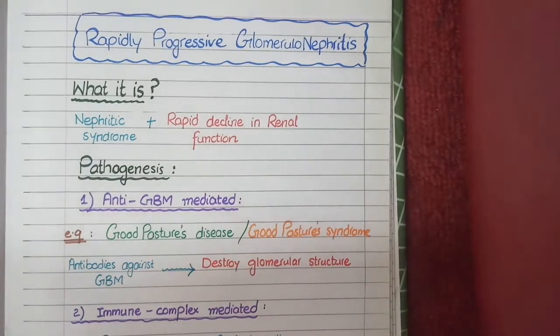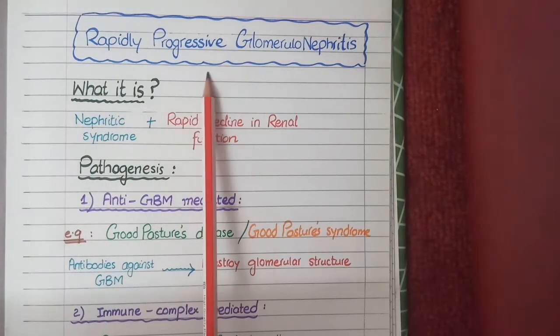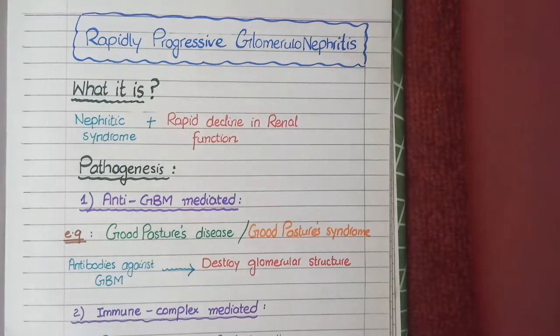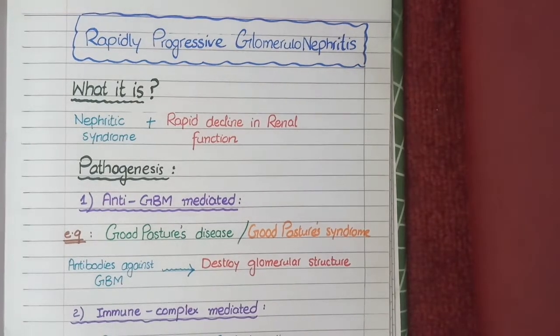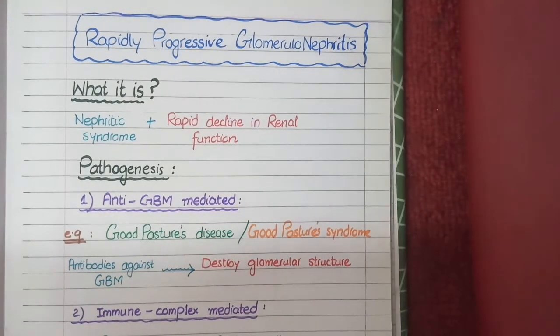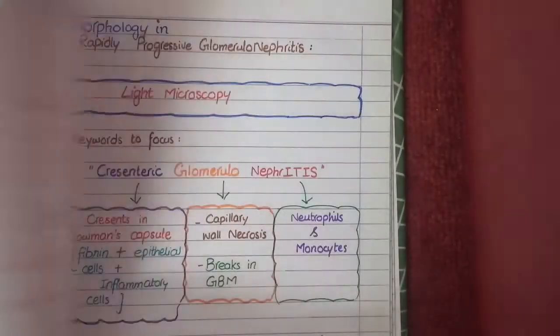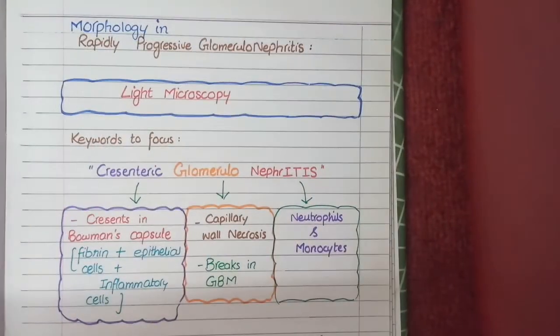In this video we will study the pathology of rapidly progressive glomerulonephritis. First we will see its definition, then we will discuss its pathogenesis according to the types, and at last we will see its morphological features in detail.